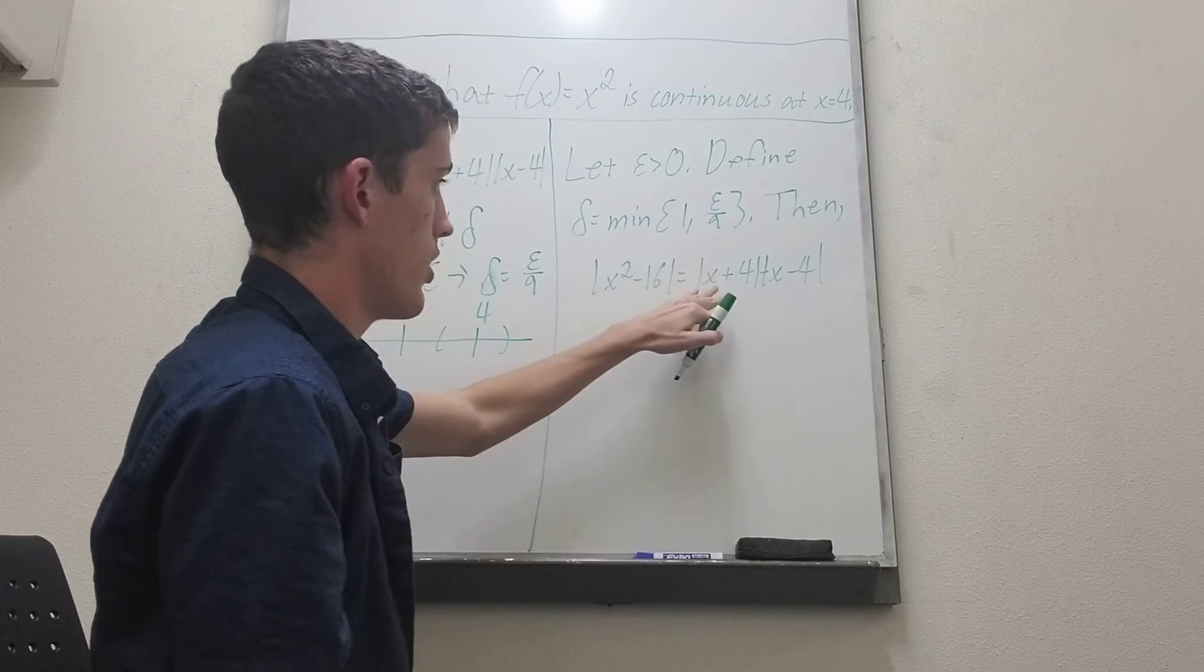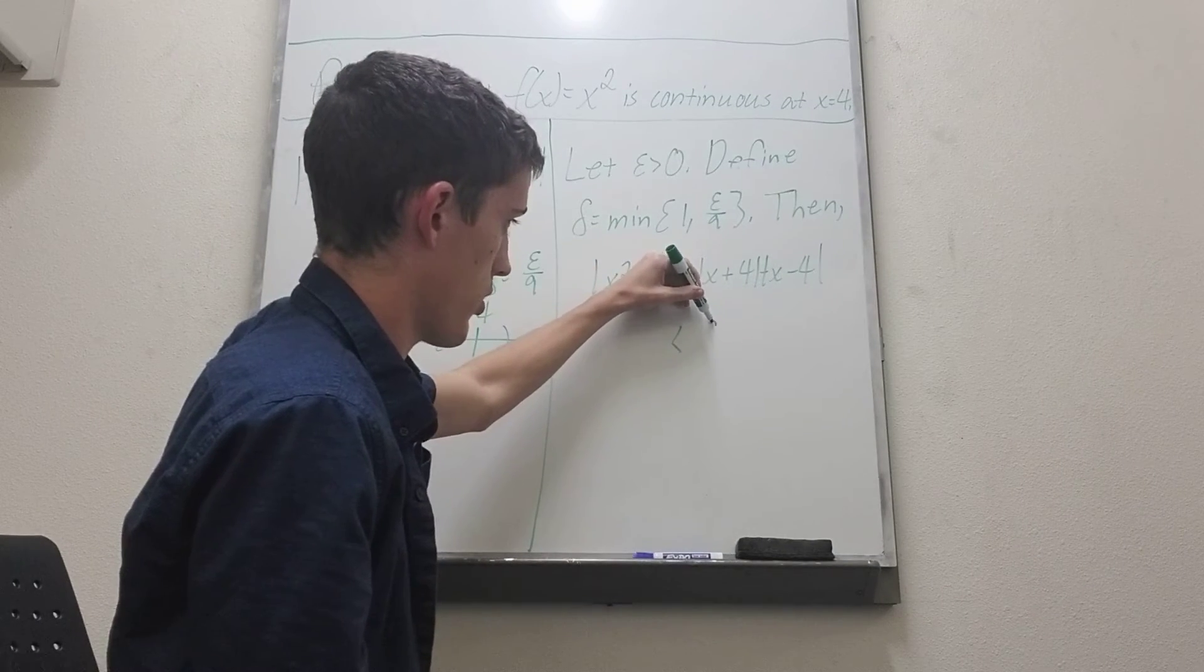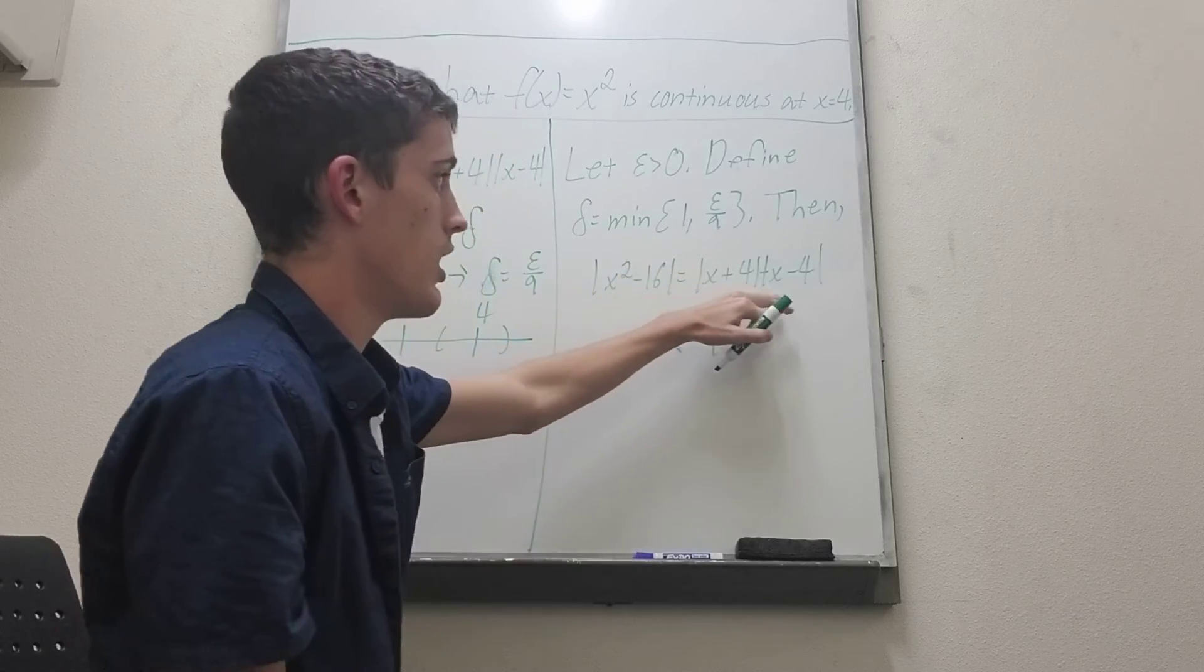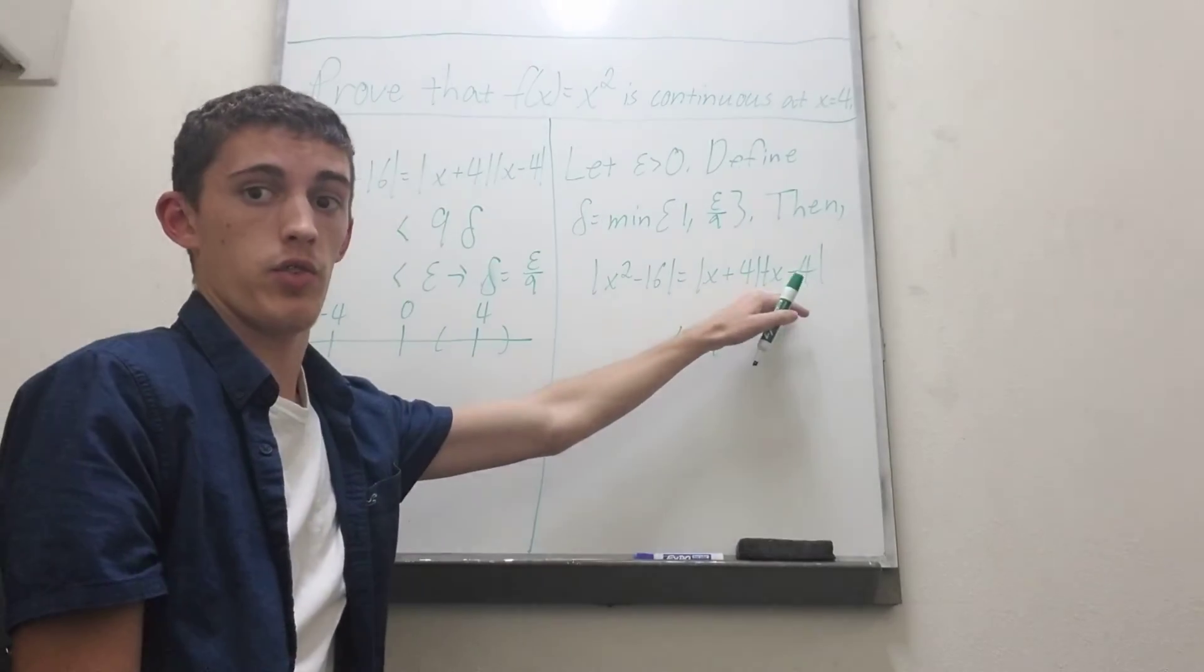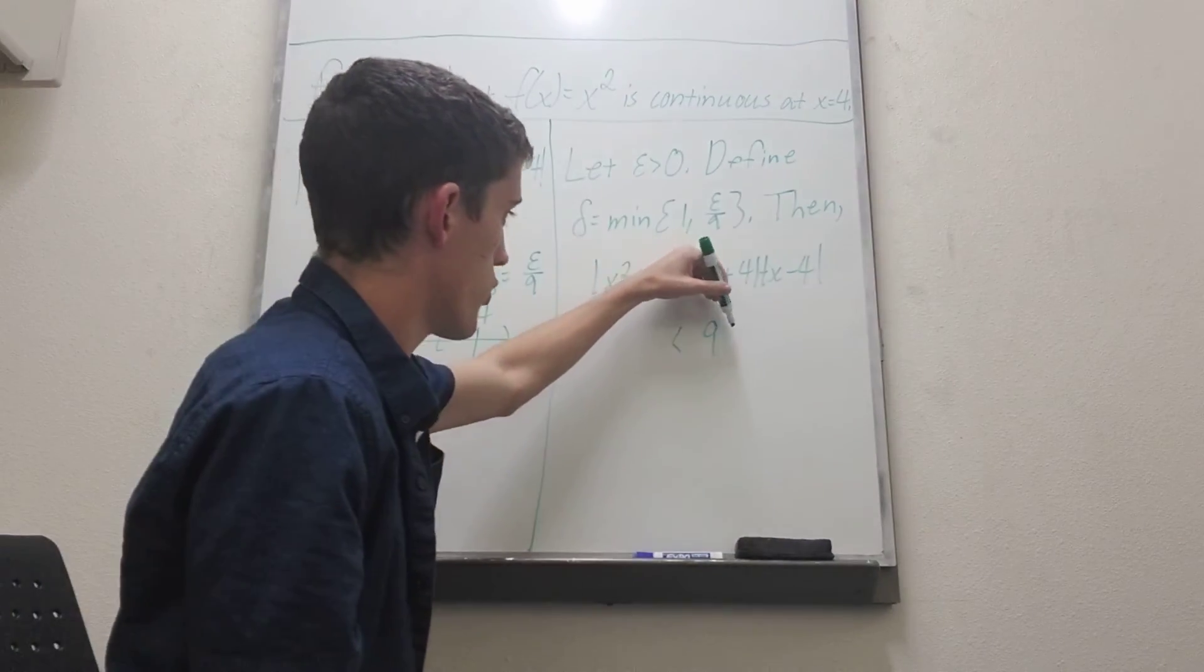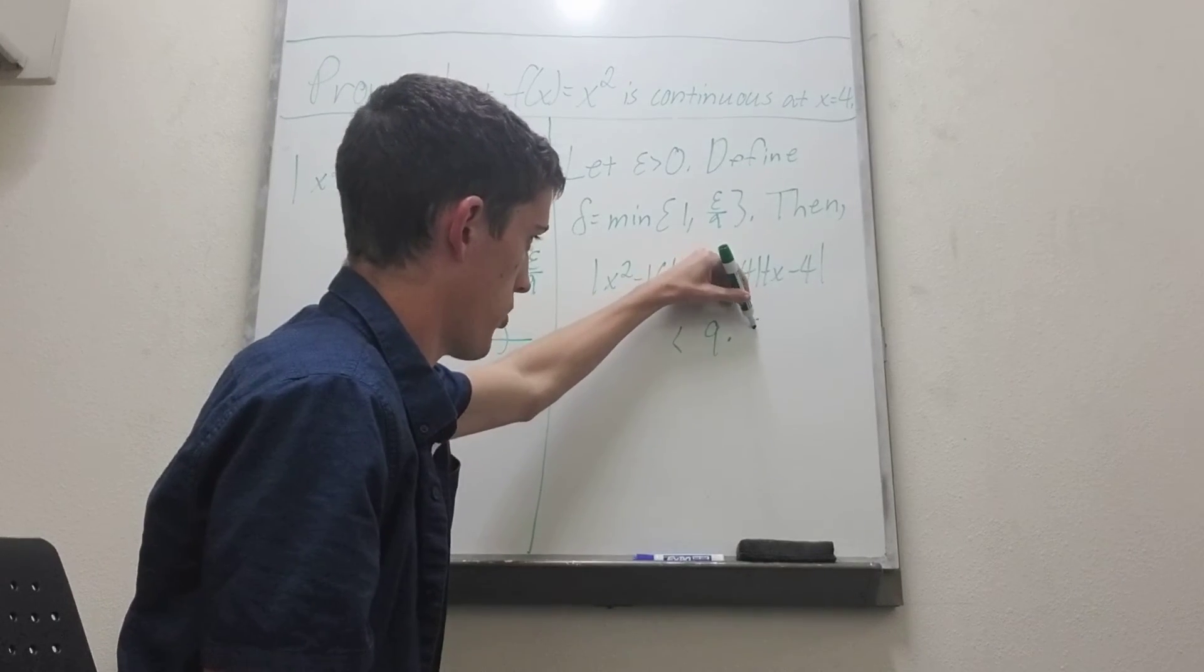And then this x plus 4 that is less than or equal to 9. And then this x minus 4 is going to be less than epsilon over 9.